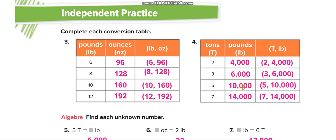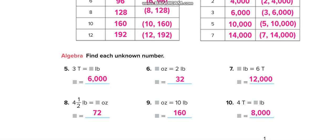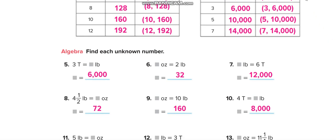For the tons-and-pounds table: 3 tons — how many pounds? 3 times two thousand equals six thousand. 2 pounds: 2 times 16 equals 32. 6 tons: 6 times two thousand equals twelve thousand.